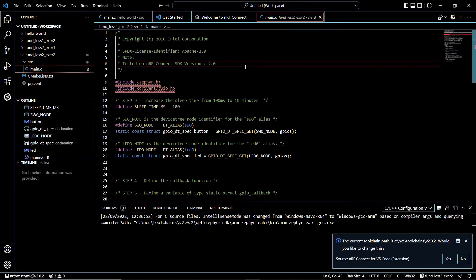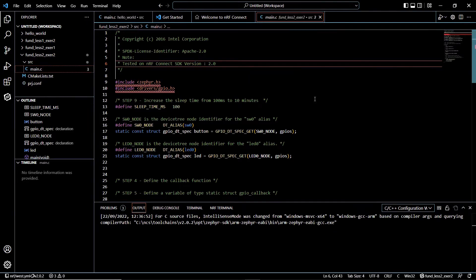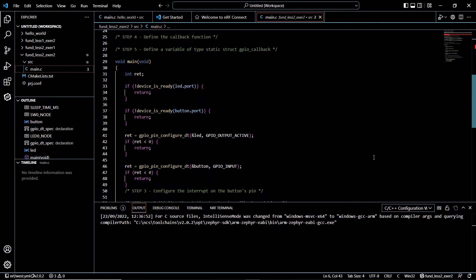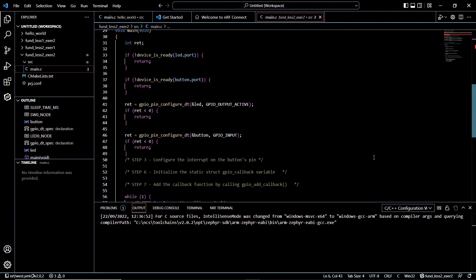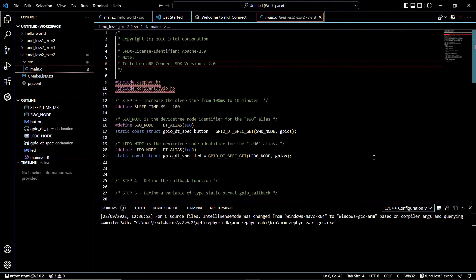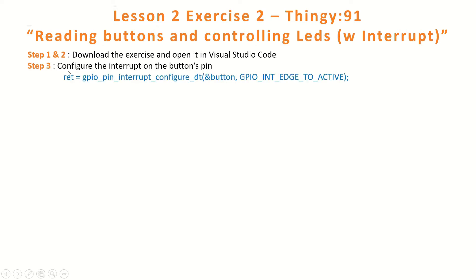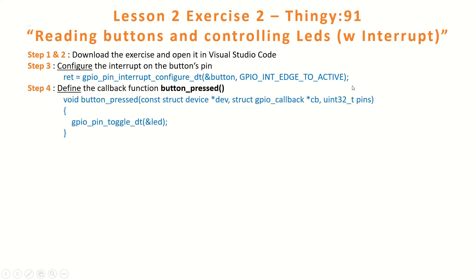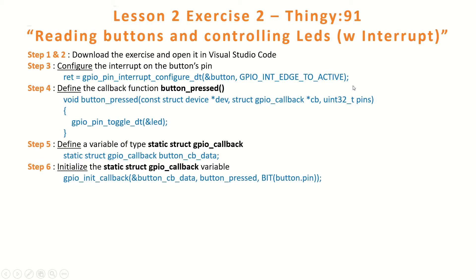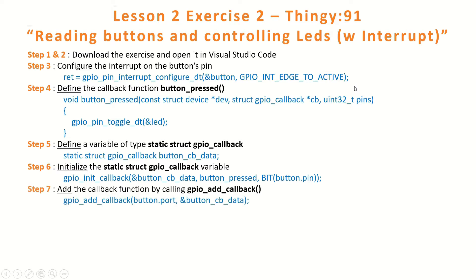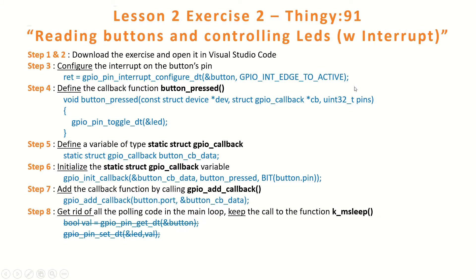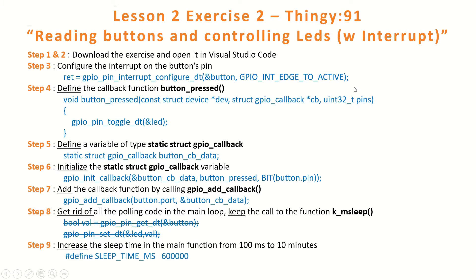We can take a look at our code. There are several lines already inserted, but we will be adding more lines in the exercise steps. Here are the steps: Steps 1 and 2 we already did. Step 3: configure the interrupts. Step 4: define the callback function. Step 5: define a variable of type GPIO callback. Step 6: initialize this variable. Step 7: add the callback function. Then get rid of all the polling code from previously.